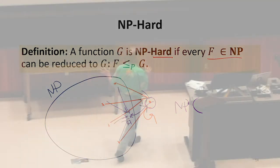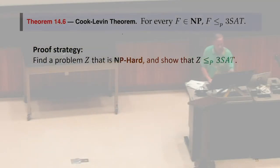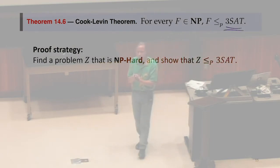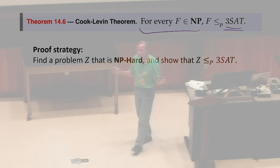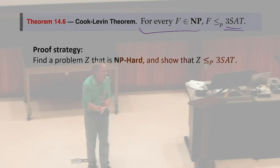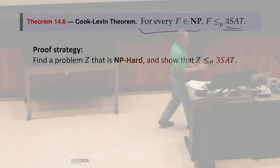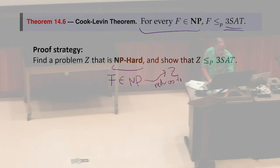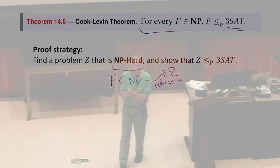So in order to prove this property, our goal is to prove that every problem within class NP can be reduced to 3SAT. We don't want to go through every problem — there are infinitely many. So if we can find one problem that is NP-hard, and show that it can be reduced to 3SAT, we're done. Because the definition of NP-hard says every problem within NP can be reduced to that problem. So if we have one problem that's NP-hard and can be reduced to 3SAT, we're done.